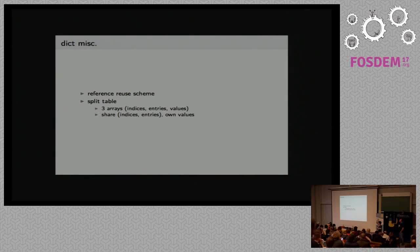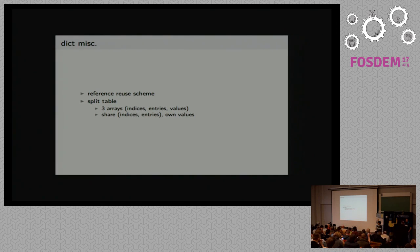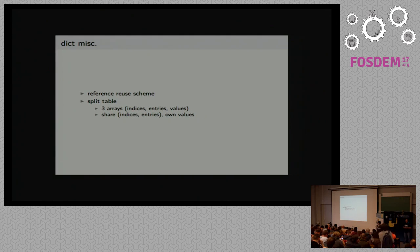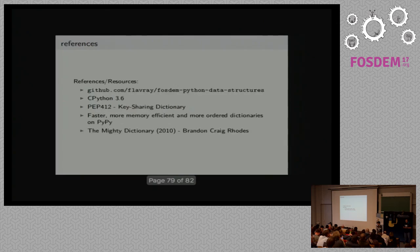A couple of miscellaneous notes about dictionaries: they have the same reference reuse scheme as lists, so CPython can save up to 80 references. If you want to know more about split tables: combined tables are made of two arrays — one of indices and one of entries. In split tables, we have three arrays: one of indices, one of entries, and one of values. All dictionaries that share the same keys share the same indices and entries table, but each has its own values table. PEP 412 is really well written and explains everything you need to know about it.